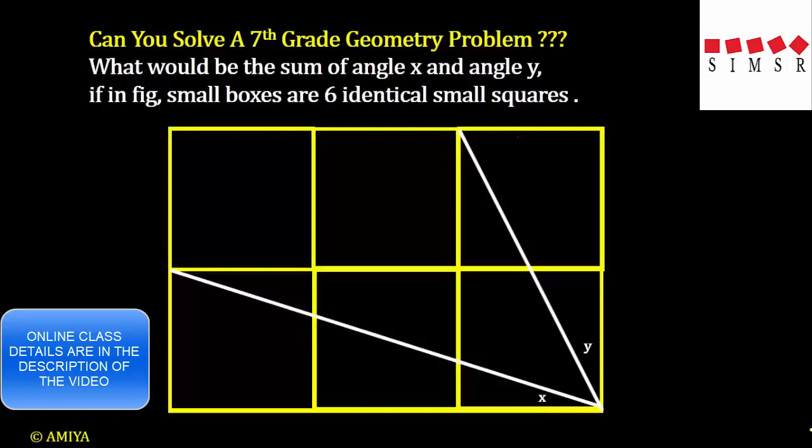Hello friends, welcome to the world of maths by ME. Can you solve a 7th grade geometry problem? Yeah, it is the 7th grade geometry problem. You have a question. What would be the sum of angle x and angle y in this figure? If in this figure, small boxes are 6 identical small squares.